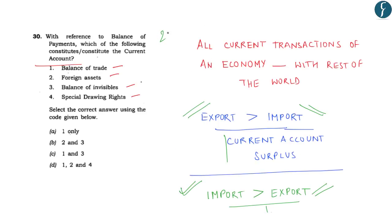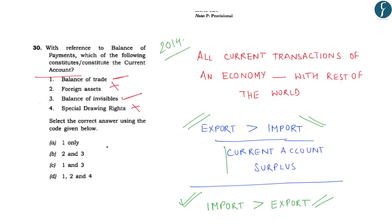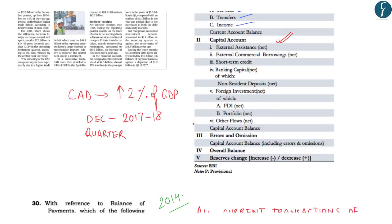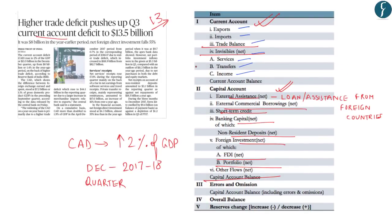Coming back to the 2014 question: balance of trade — yes, it is included; foreign assets — no; balance of invisibles — yes; special drawing rights — no. Both balance of trade and invisibles are included in the current account, so the correct answer is C. It is also important to understand capital account — an account consisting of capital transactions of an economy with the rest of the world. It includes external assistance, external commercial borrowings (ECB), short-term credit, banking capital including non-resident deposits, and foreign investment including FDI and portfolio investment.